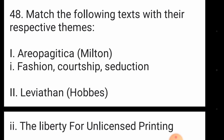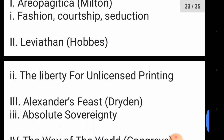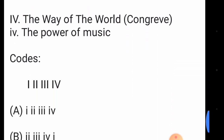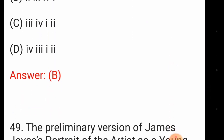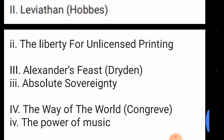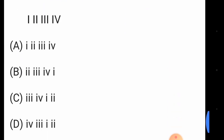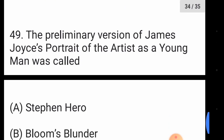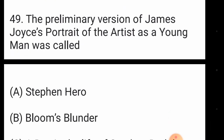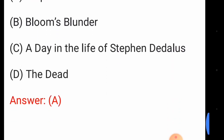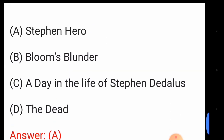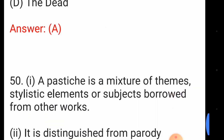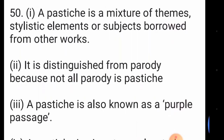Question forty-eight: match the following texts with their respective themes. The correct answer is option number B. Question forty-nine: the preliminary version of James Joyce's 'Portrait of the Artist as a Young Man' was called — option number A, 'Stephen Hero'.